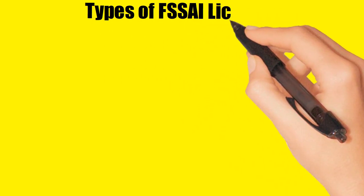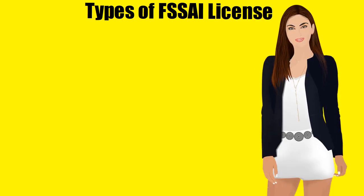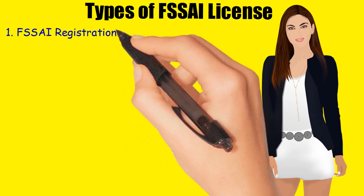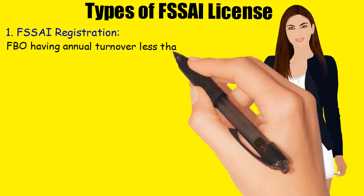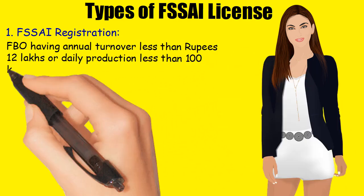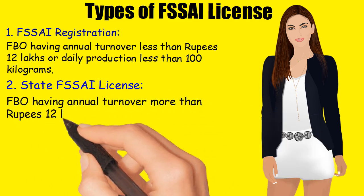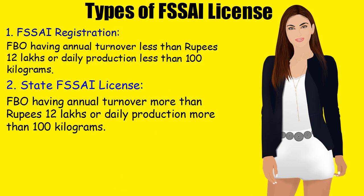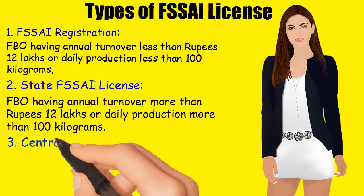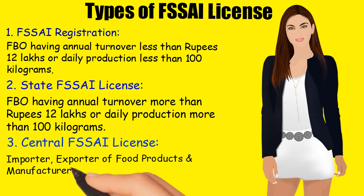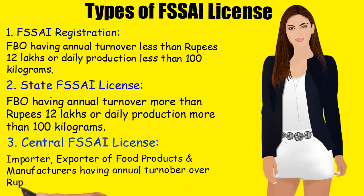Let's see the types of FSSAI Licenses and who is required to take which license. 1. FSSAI Registration — for FBOs having annual turnover less than Rs. 12 lakhs or daily production less than 100 kg. 2. State FSSAI License — for FBOs having annual turnover more than Rs. 12 lakhs or daily production more than 100 kg. 3. Central FSSAI License — for importers, exporters of food products, and manufacturers having annual turnover over Rs. 20 crores.